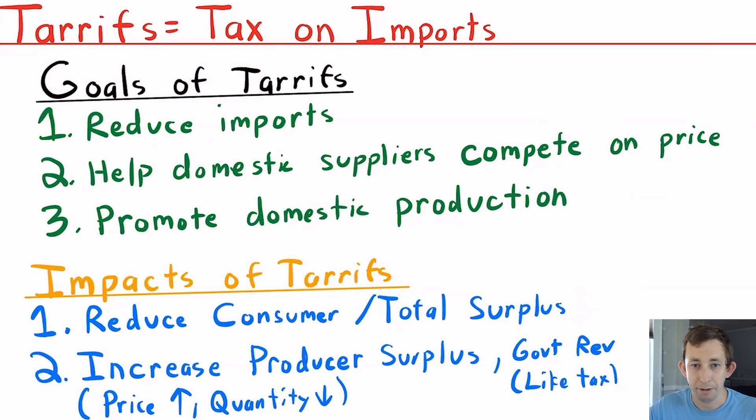So we're going to have some deadweight loss, and if we're making things more expensive, we're reducing consumer surplus. However, we are increasing producer surplus. We're getting government revenue because we're getting tax money. So it's sort of like a trade-off between consumer and producer surplus when we implement this tariff.